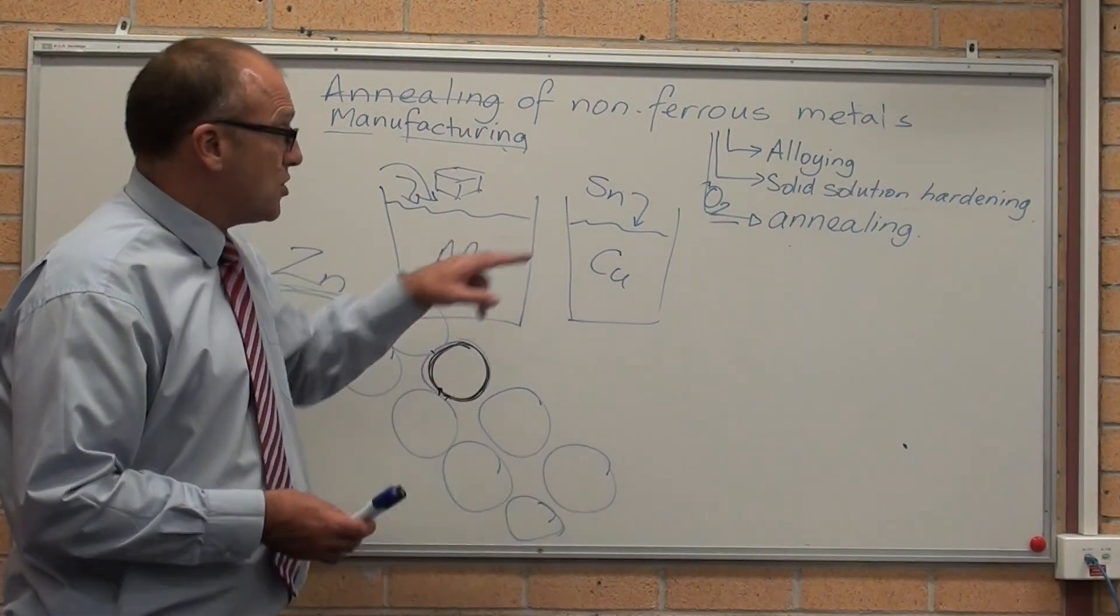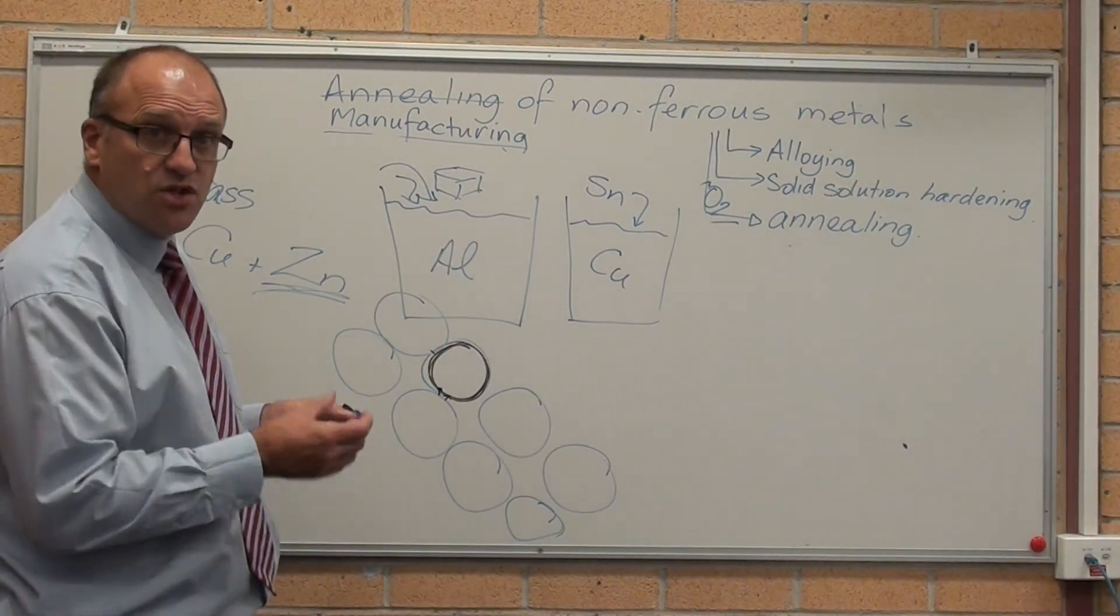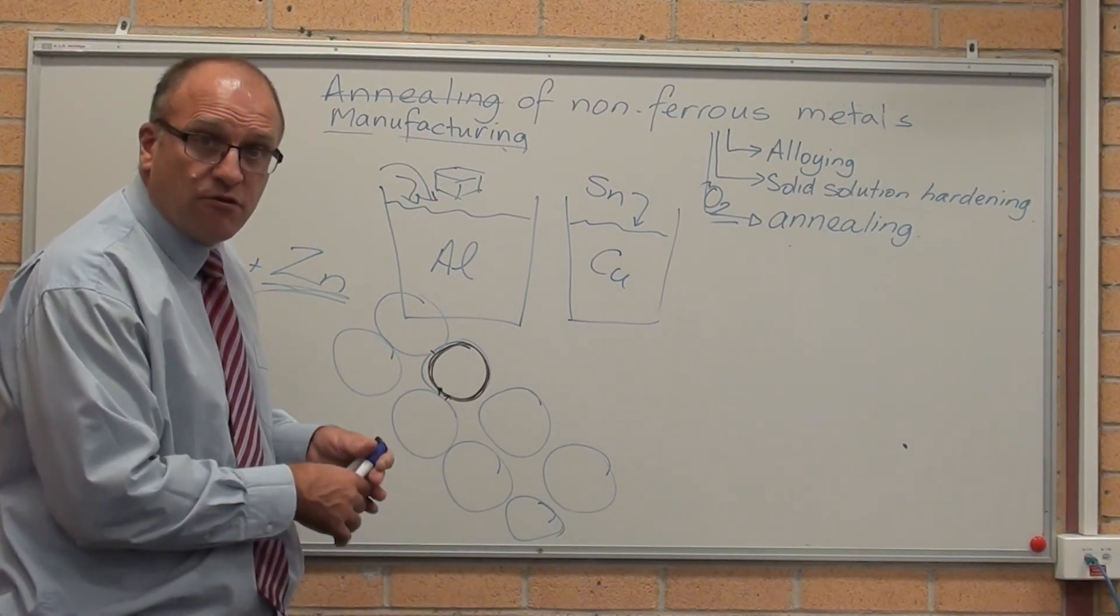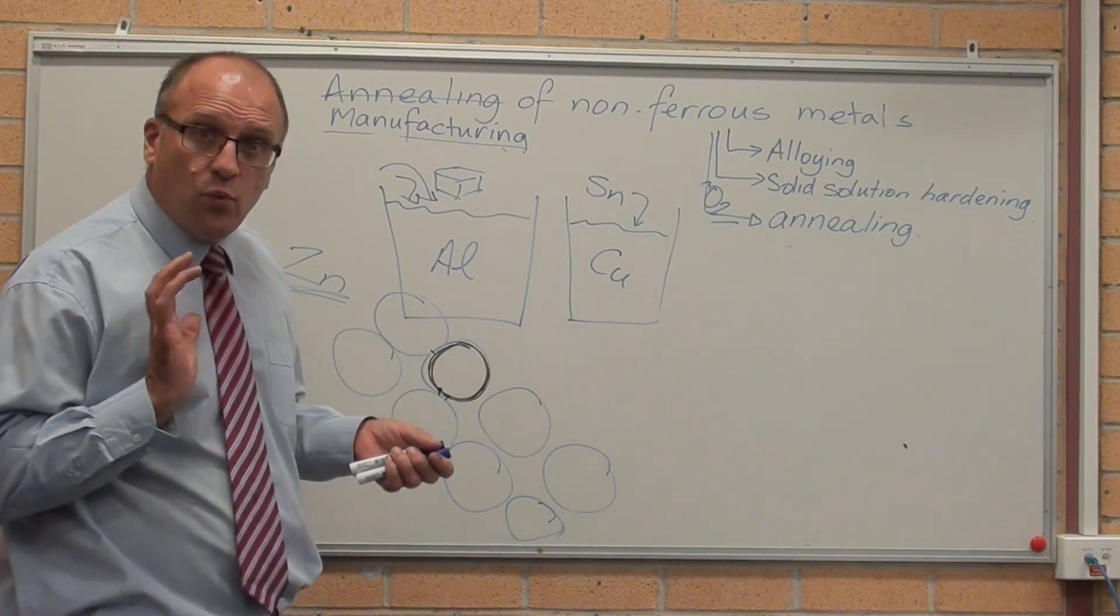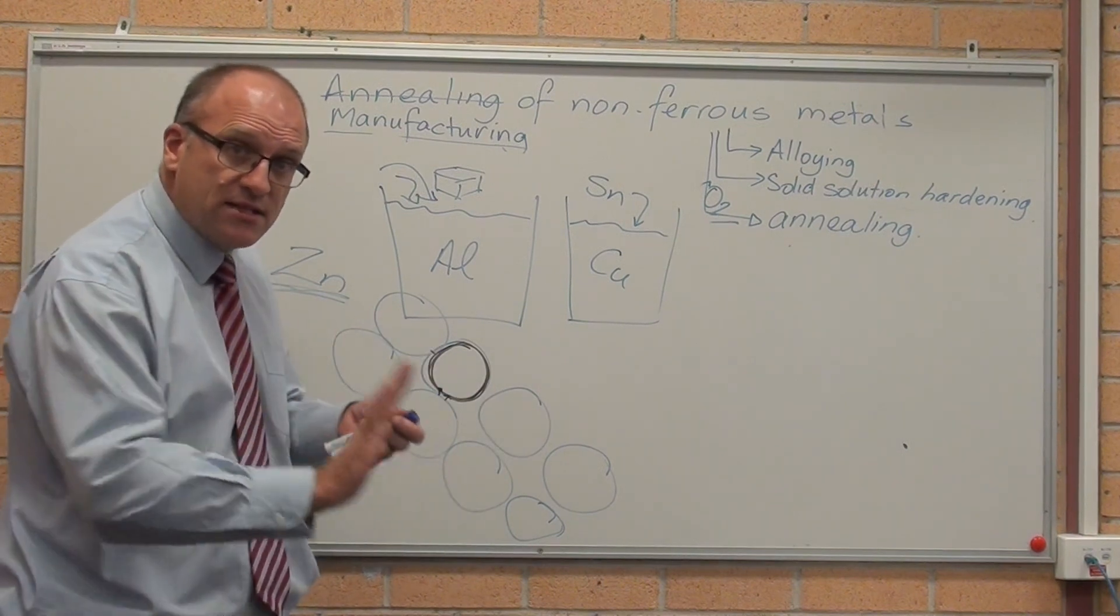So substitutional hardening basically means you put an atom of a different size in the matrix, which then interferes with smooth passage of the atoms.